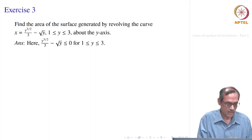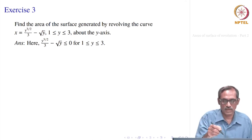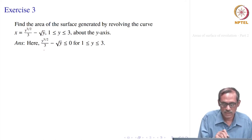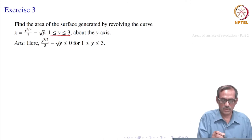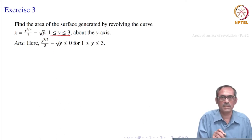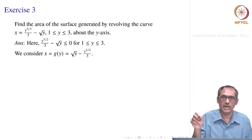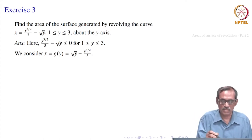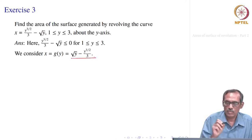Since revolution is about the y-axis, x is already given as a function of y. We verify: throughout y from 1 to 3, y^(3/2)/3 - √y ≤ 0, so x is negative. We therefore take g(y) = √y - y^(3/2)/3 to keep it positive.